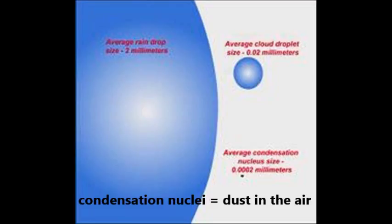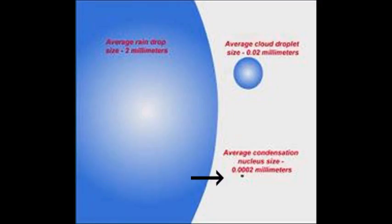Now, condensation nuclei is just a fancy word for a piece of dust floating around in the air. You can see in this diagram, that little black spot is the size of a condensation nuclei compared to a raindrop, which is on the left.